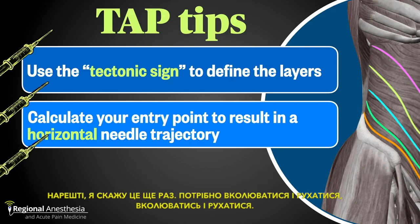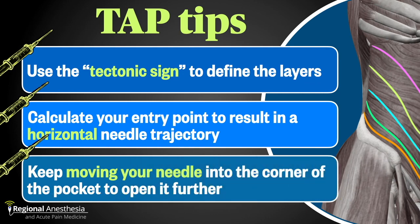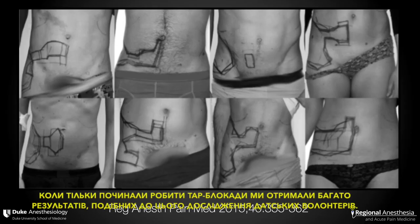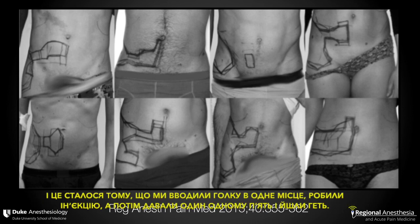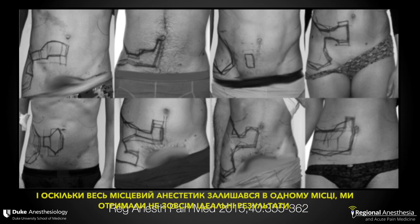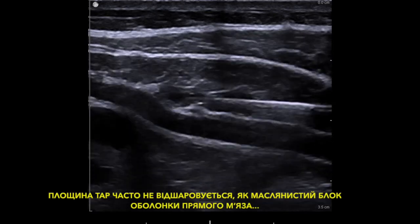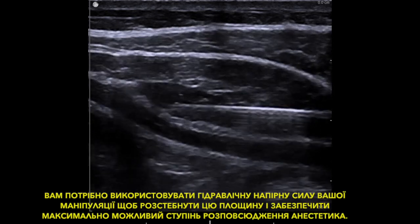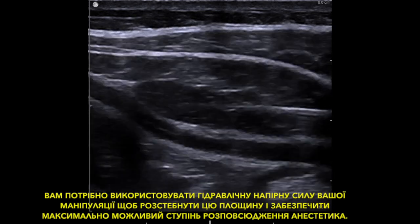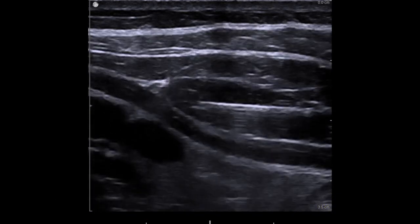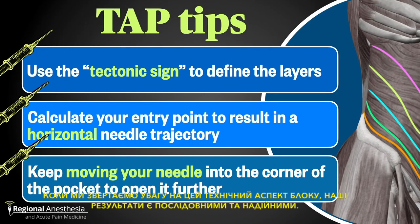And lastly: you need to stick and move, stick and move. In the early days of TAP, we got a lot of results like this Danish volunteer study, and it was because we were landing the needle in one spot, injecting, and then high-fiving each other and walking away. Because all the local anesthetic stayed in one location, we got less than ideal results. The TAP plane often doesn't peel apart like a buttery rectus sheath block. You need to use the hydraulic pressure head of your solution to unzipper that plane and ensure that you have the greatest degree of spread possible. When we pay attention to this technical aspect of the block, our results are consistent and reliable.